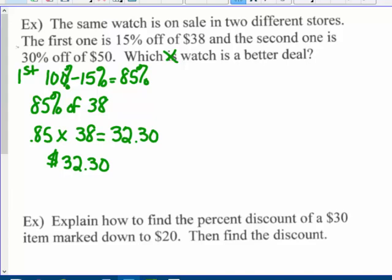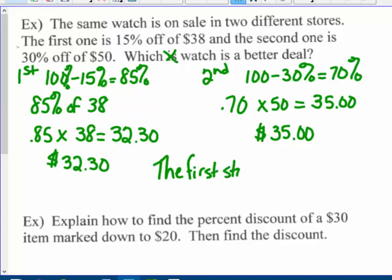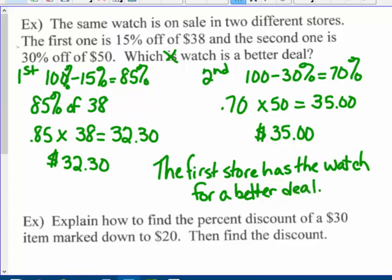Store two: it's a $50 watch, 30% off. Using method two, 100% minus 30% equals 70%. 70% of $50 equals $35. Which watch is the better deal? Store one is the better deal at $32.30 rather than $35.